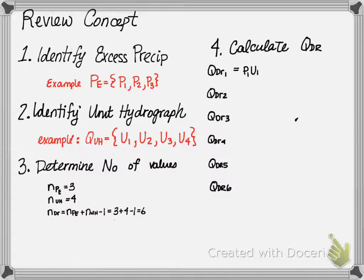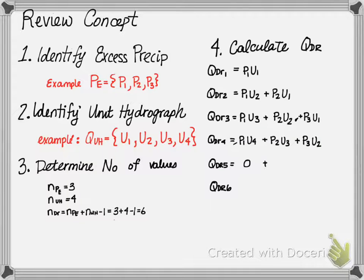The first one is P1 times U1. Next, it's P1, U2, plus P2, U1. P1, U3, plus P2, U2, plus P3, U1. Zero, P2, U2, plus P3, U2. Zero, P2, U4, plus P3, U3. And finally, P3, U4.